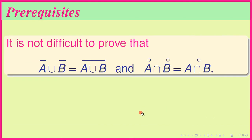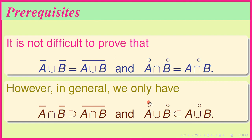It is not difficult to prove that closure respects union and interior respects intersection. However, in general we only have one-way traffic as far as closure respecting intersection and interior respecting union is concerned.